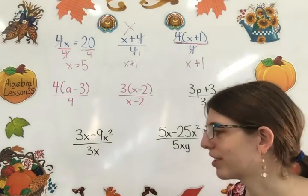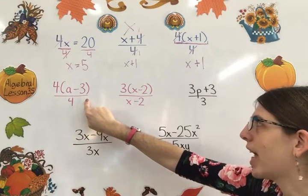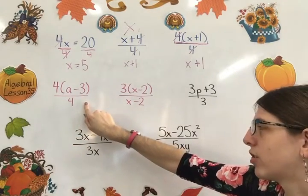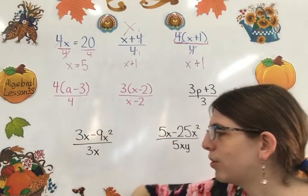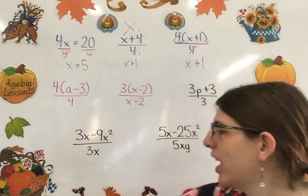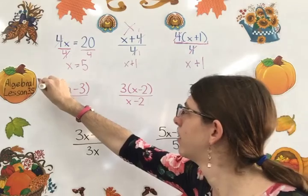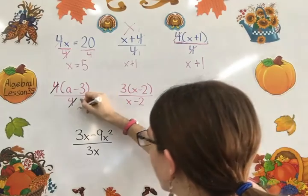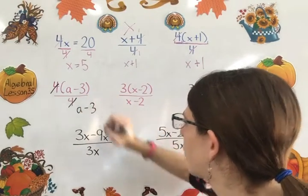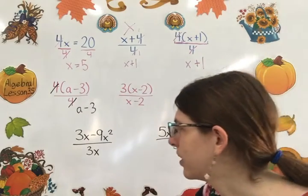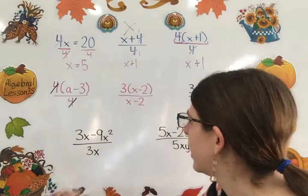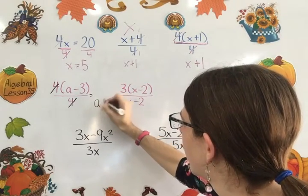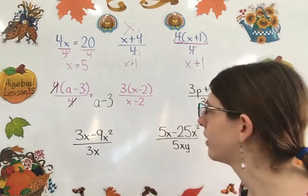So let's look at a couple more examples. Here I have 4 times a minus 3 divided by 4. 4 is a factor and a minus 3 is a factor. So I can reduce that 4 to 1. I can cancel out my 4 in this problem. So it becomes 1 there. So this equals a minus 3 as your answer.